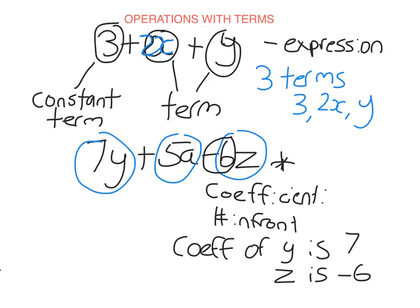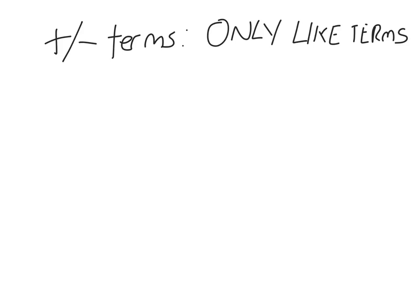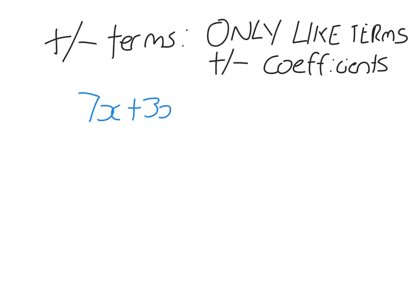So we're going to use that when we do operations with terms. When we try to add and subtract terms, we can only do it with like terms. When they are like terms, you just add or subtract the coefficients — the number in front of. So 7X plus 3X: we just add the coefficients because they're like terms. 7 plus 3 is 10, and we keep the X. They are like terms because they both have the same sequence of pronumerals — they both have 1X.